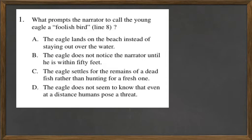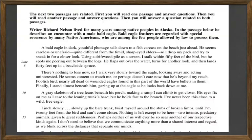Let's start with the first question: what prompts the narrator to call the young eagle a foolish bird on line 8? On line 8, it says 'foolish bird.' Nearly all dead or wounded eagles found in this part of the world have bullets in them. There's a context clue — it's showing that the ability of humans to use tools to still inflict harm is really key.